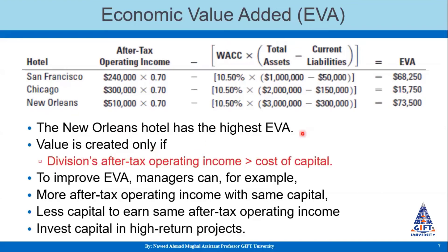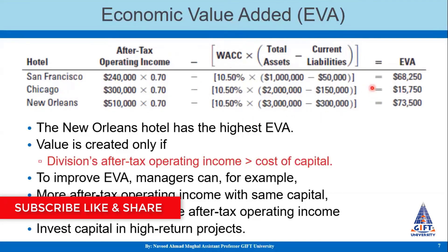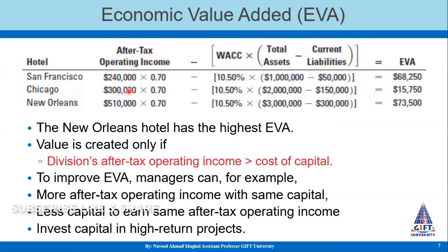Value is created only when a division's after-tax operating income is greater than the cost of capital. We are comparing two figures: after-tax operating income and cost of capital. When after-tax operating income exceeds the cost of capital, there is value addition. If the cost of capital is more than after-tax operating income, it means we are generating insufficient income to cover the cost of capital and are not adding to the economic value of the company.